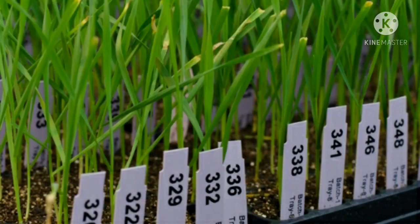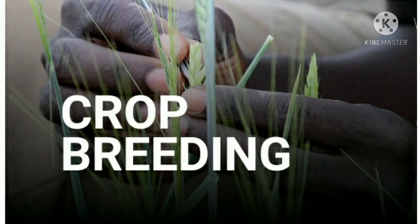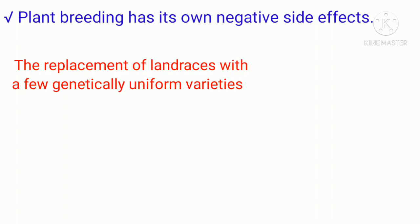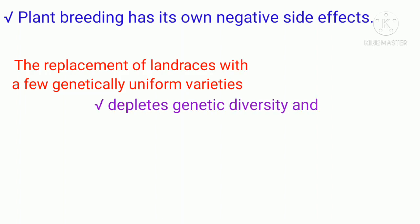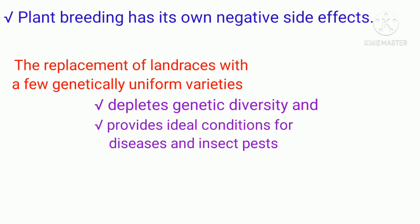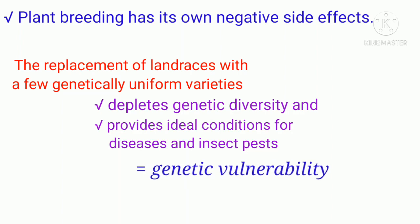Plant breeding is one way to confront the challenge of bridging the widening gap between the demand and supply of food. Despite its importance, however, plant breeding has its own negative side effects. The replacement of landraces with a few genetically uniform varieties depletes genetic diversity and provides ideal conditions for disease and insect pests — this is called genetic vulnerability.